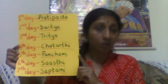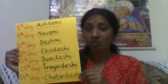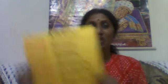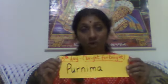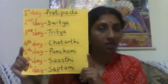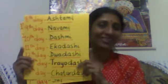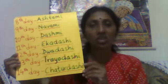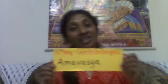Let me go through the list again. We have Pratipad, Dvitiya, Tritiya, Chaturthi, Panchami, Shashti, Saptami, Ashtami, Navami, Dashami, Ekadashi, Dvadashi, Trayodashi, Chaturdashi — and then Purnima for the bright fortnight. Again we start with Pratipad through to Chaturdashi, and then the fifteenth day changes — we call it Amavasya. So we have two sets of Pratipad through Chaturdashi, but only one Purnima and only one Amavasya.